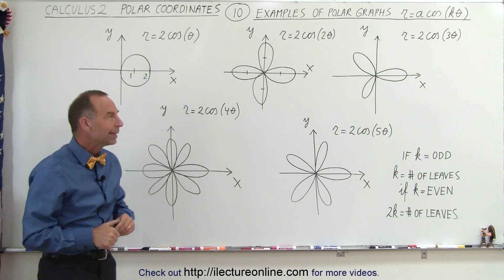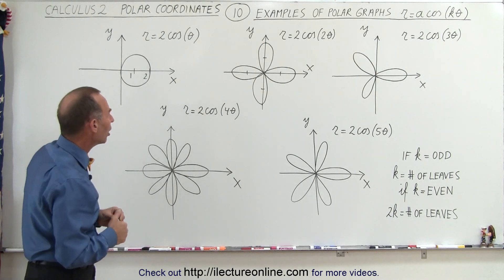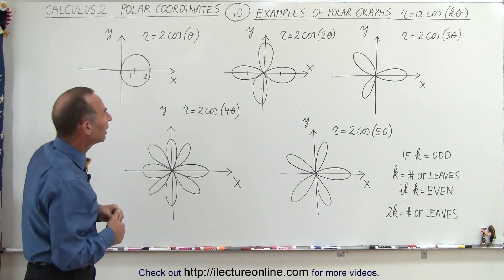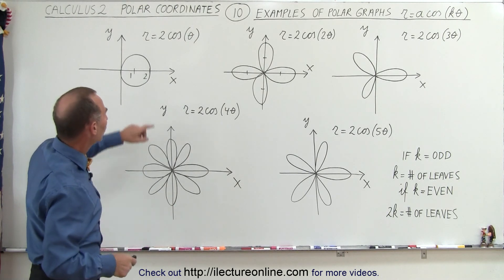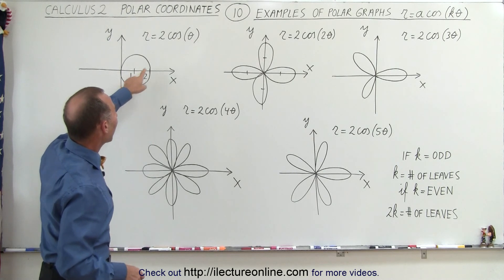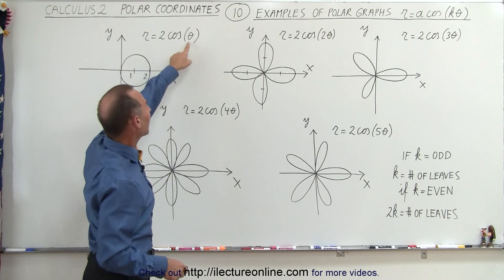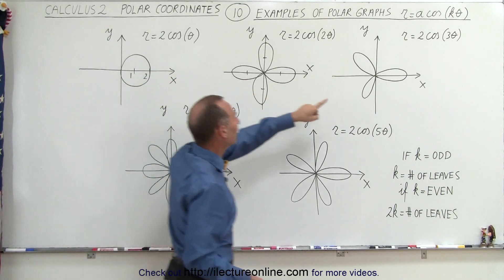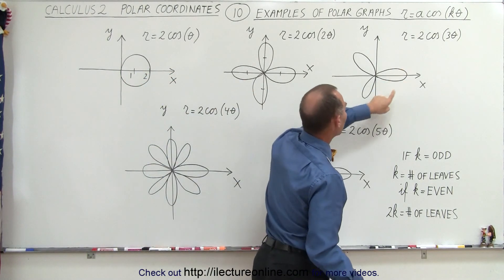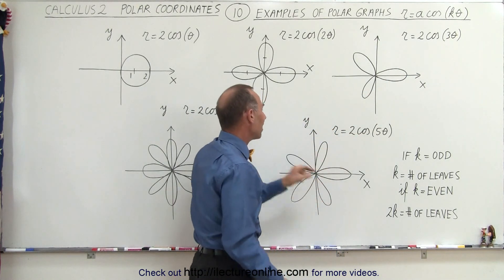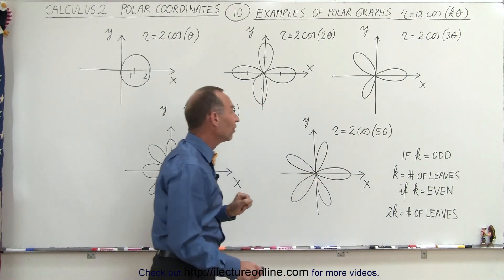What happens when k is odd? When k is odd, notice you have the same number of leaves as the value for k. k is 1, you have one leaf. k is 3, you have three leaves. k is 5, you have five leaves.